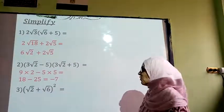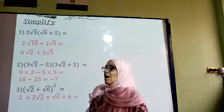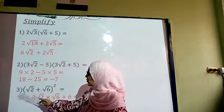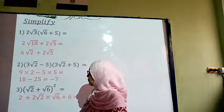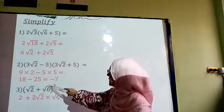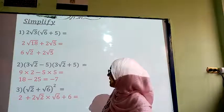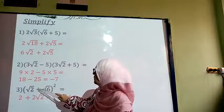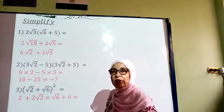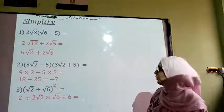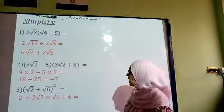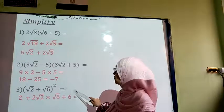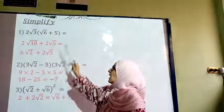So I am going to solve it like this. The first number is squared, so root(2)² gives me 2. The second number is squared, so root(6)² gives me 6. The middle term is root 2 multiplied by root 6 multiplied by 2. If you don't know how to work with this, you can write root 2 + root 6 times root 2 + root 6 and do the distribution as we did before.